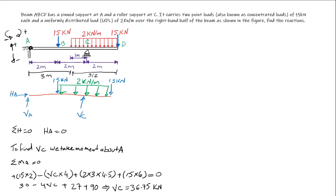Next, since we found VC, we could easily find VA now by saying the sum of all vertical forces equals 0. Plus VA plus VC because it's acting upward, minus this 15 kilonewton because it's acting downward, plus VC acting upward, minus the UDL 2 times 3, minus 15 kilonewton acting downward, equal 0.